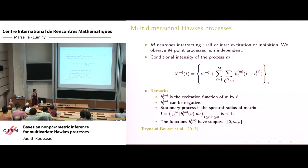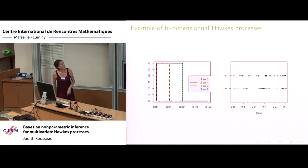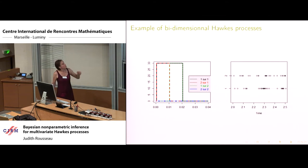Another constraint of interest, which makes sense in neuroscience, is that the H_{LM} interaction functions have compact support, and we know an upper bound on the support, S_max. That's the context we're working in. We are interested in estimating the parameters H and the nu's.